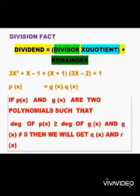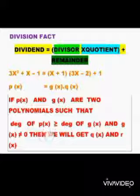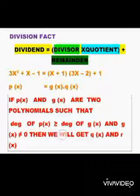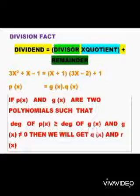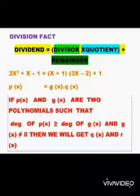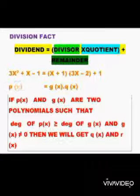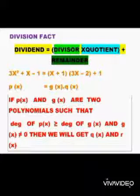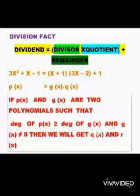Such that the degree of P(x) is greater than or equal to the degree of G(x). The degree of P(x) here is 2, which is greater than the degree of G(x), which is 1.